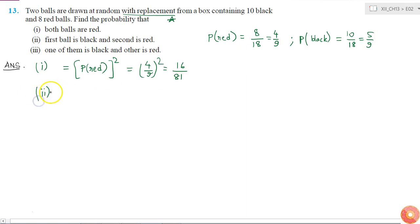In the second case, the first ball should be black and the second ball should be red. Because they are independent events, the probability of taking a black ball is 5 by 9 and probability of taking a red ball is 4 by 9, which is equal to 20 by 81.